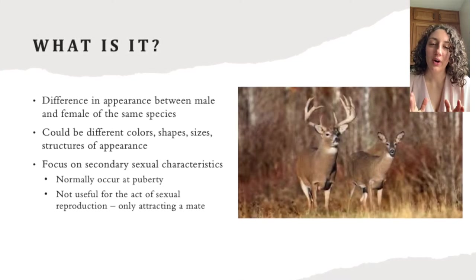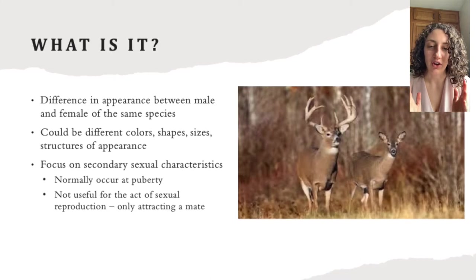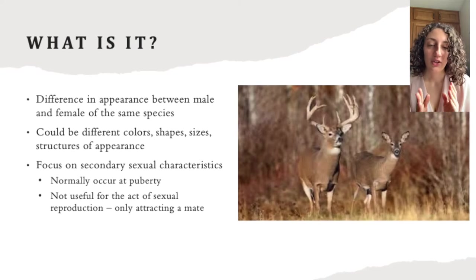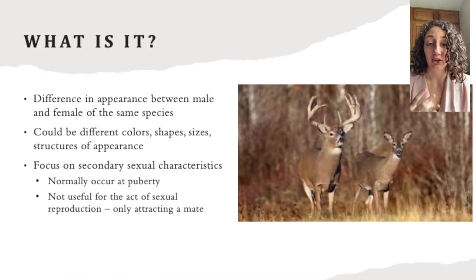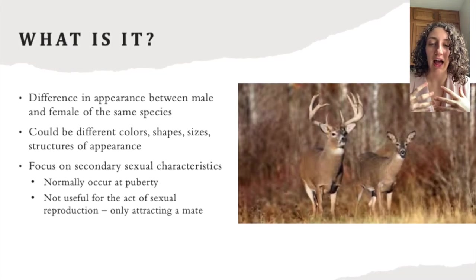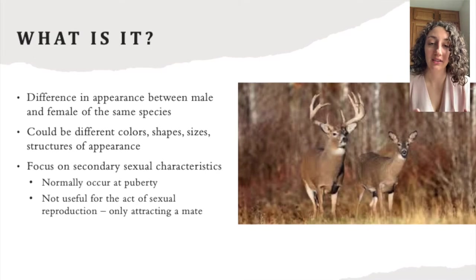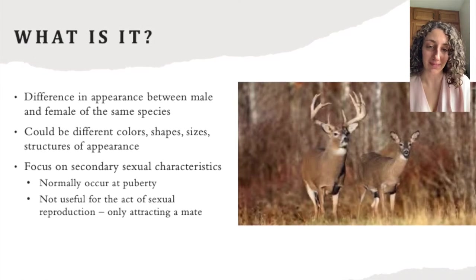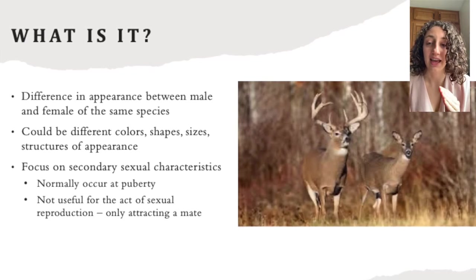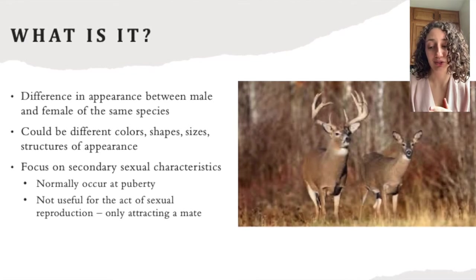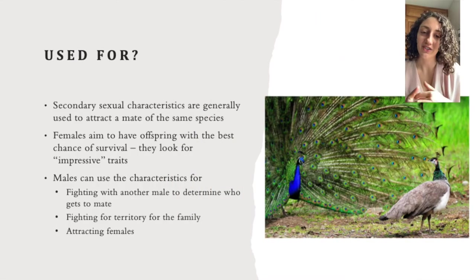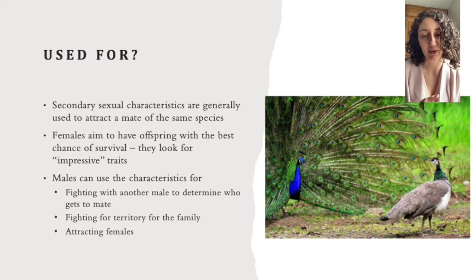We're going to focus on what's called secondary sexual characteristics, which occur after puberty. The ones that are before puberty are the genitals — something you are born with, which aids in the actual act of sexual reproduction rather than just attracting a mate. Secondary sexual characteristics do not aid in the actual act of reproduction; they are used to find a mate.